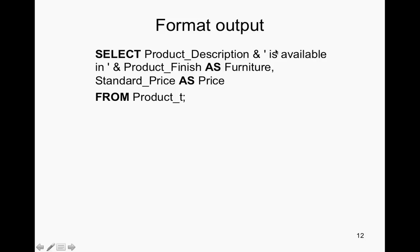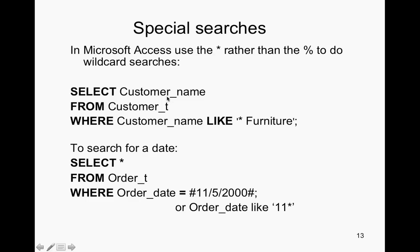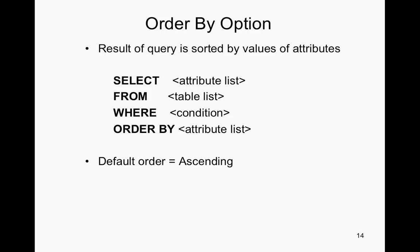You can format output by using aliases — for example: product description AS 'is available in', product finish AS 'furniture', standard price AS 'price' FROM product table. For special searches, if you're looking for a specific date format, you can put the order date, or if you're just looking for a month — for example, 11 for November — you put 11 followed by a wildcard. The asterisk selects all those rows and looks for 11.